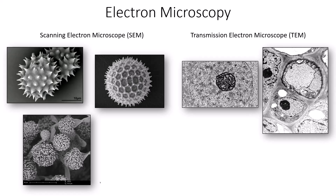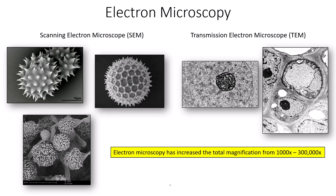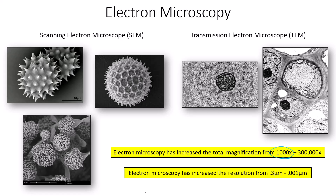The transmission electron microscope will give you equivalent resolution and magnification, but surface detail isn't possible because the beam of electrons is going through the specimen. Electron microscopy has increased total magnification to 300,000 times, compared to what was traditionally capable with the light microscope at 1,000 times. The light microscope allows us to see living specimens that can move at 1,000 times magnification, but the electron microscope takes that magnification way further to 300,000 times.